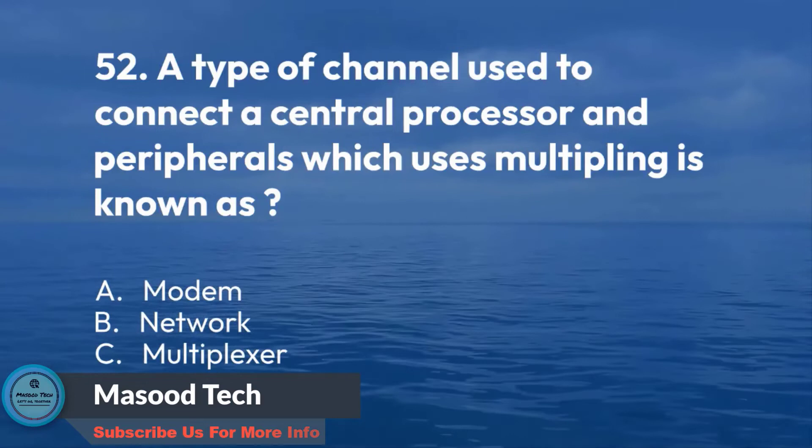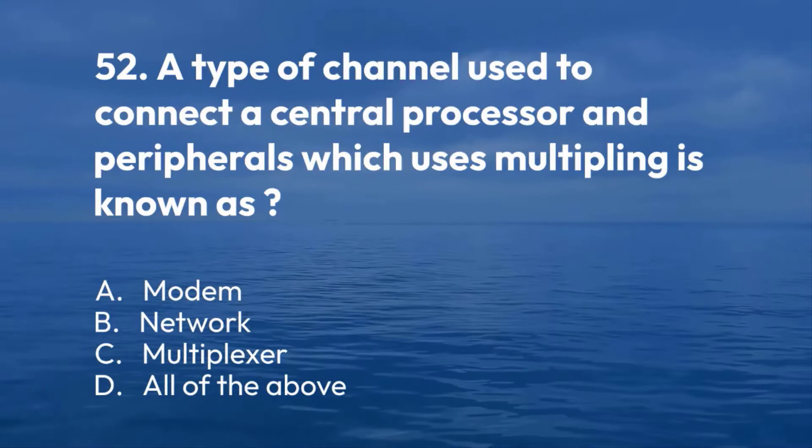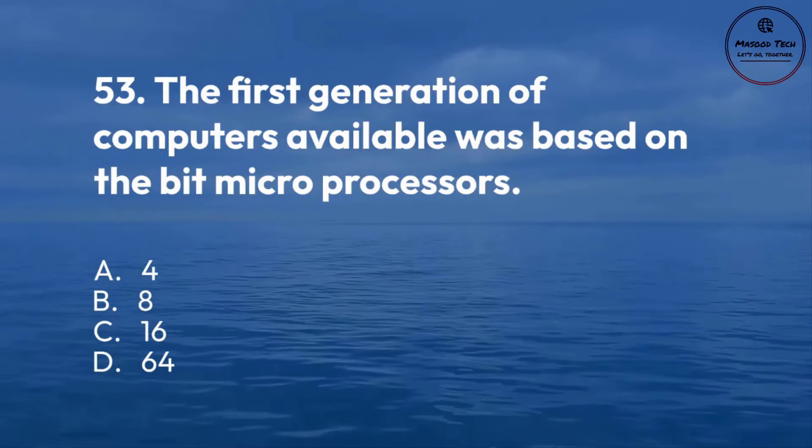Number 53. The first generation of computers available was based on the bit microprocessors: A. 4. B. 8. C. 16. D. 64. Correct answer is B.